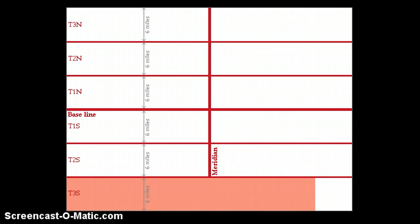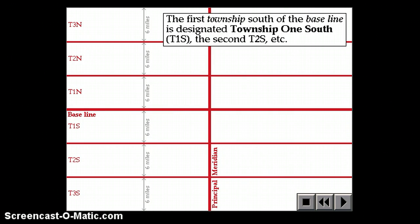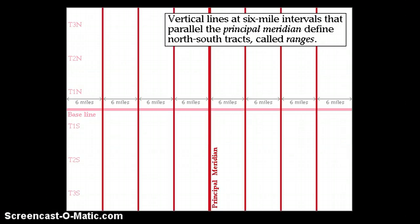There are also township designations south of the baseline, T1 south, T2 south, T3 south. Then we draw vertical lines at six-mile intervals parallel to the principal meridian, and those are called the ranges.